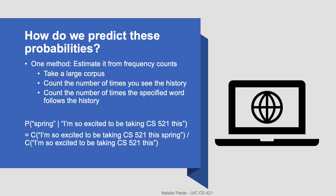The way we predict these probabilities can vary to some degree, but a common method is to estimate the probabilities based on word frequency counts. Basically, you can take a large corpus, count the number of times you see the history you're considering, and then count the number of times a specified word follows that history.